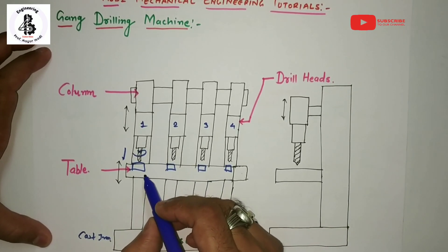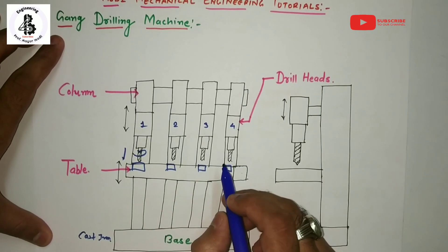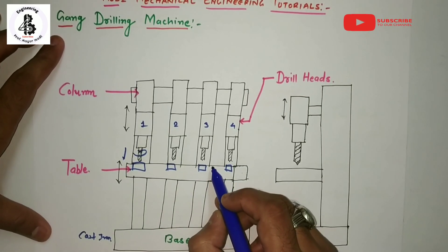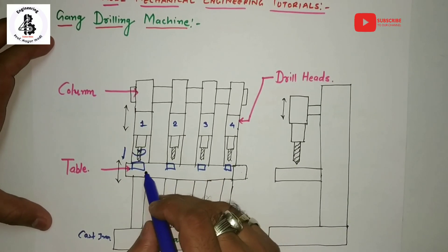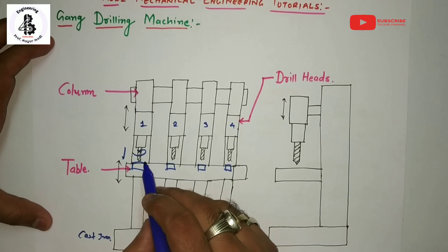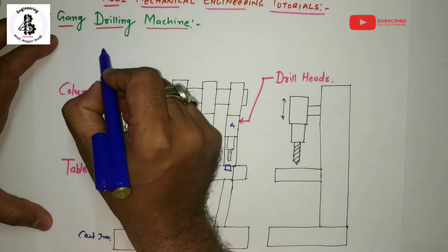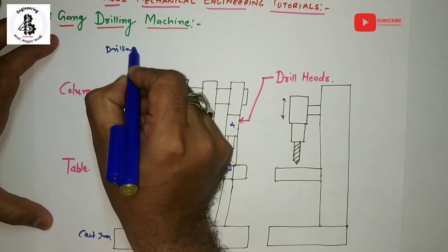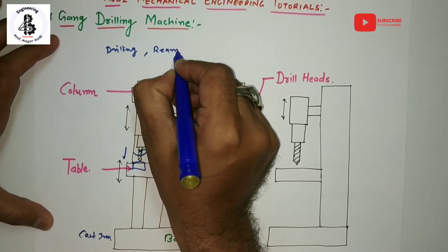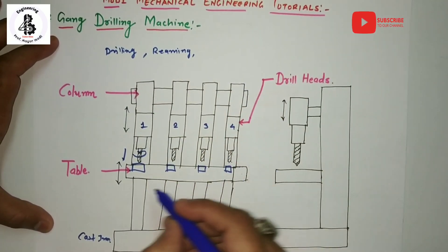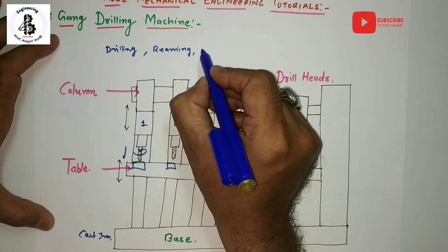You can easily perform multiple operations on the gang drilling machine, which reduces manufacturing time and increases the accuracy of the products. According to your requirements, you can perform drilling operations on the gang drilling machine, and you can also perform reaming operations to smoothen internal surface areas.